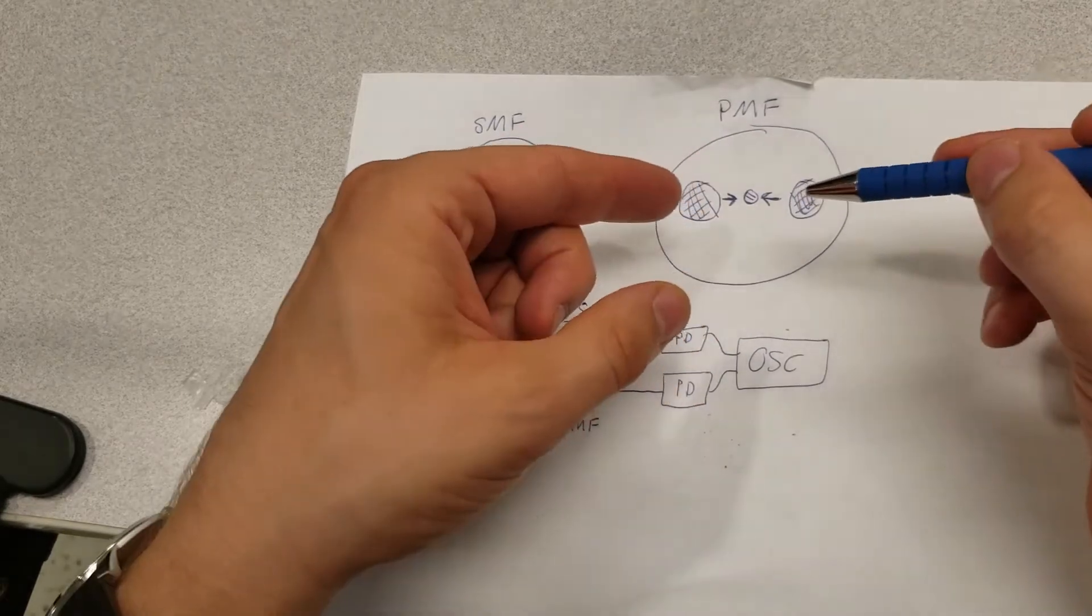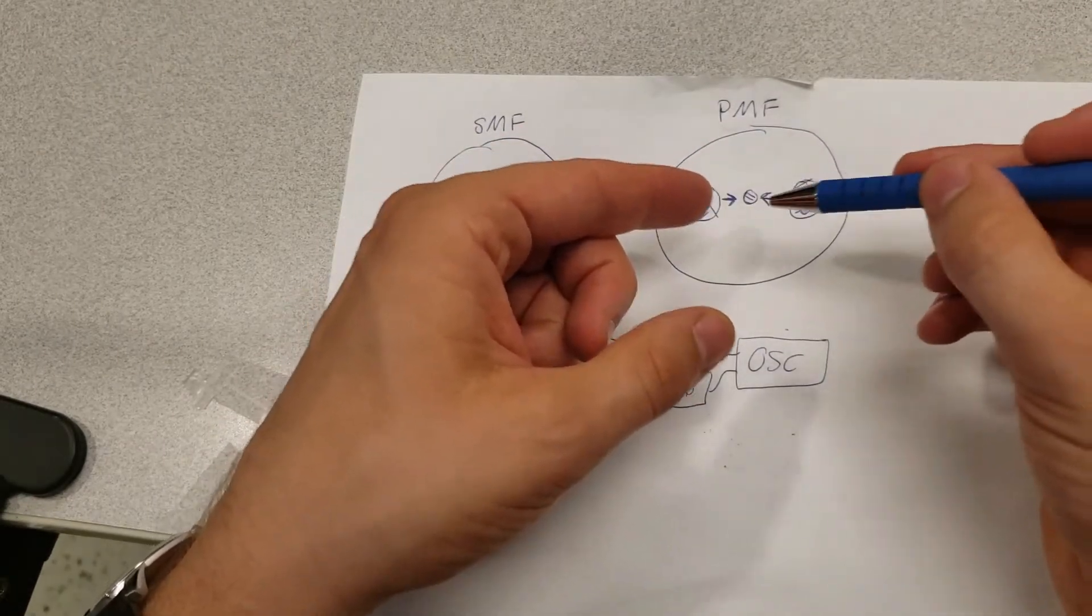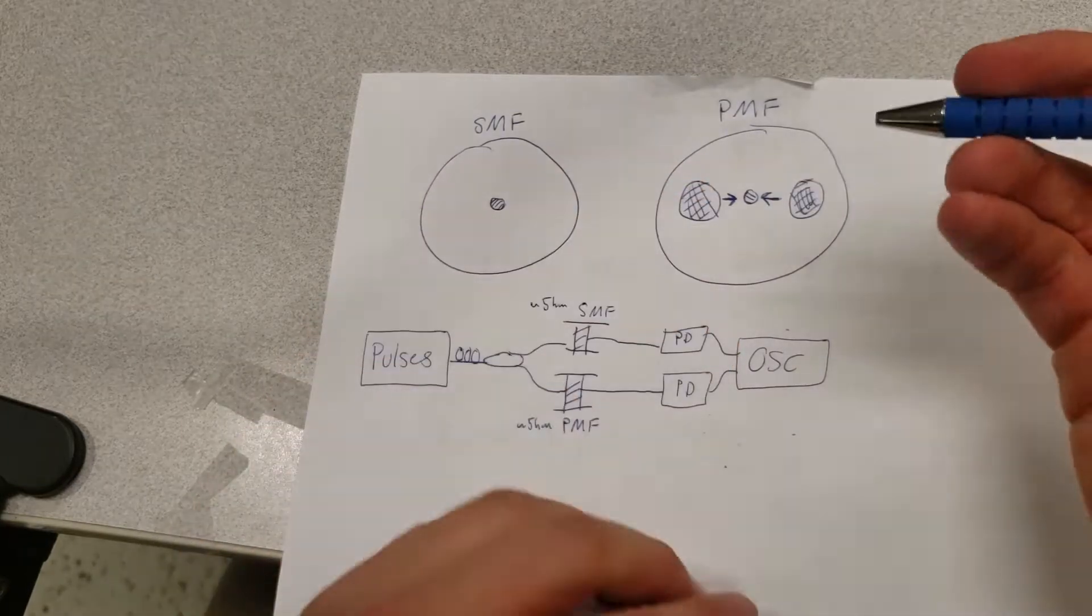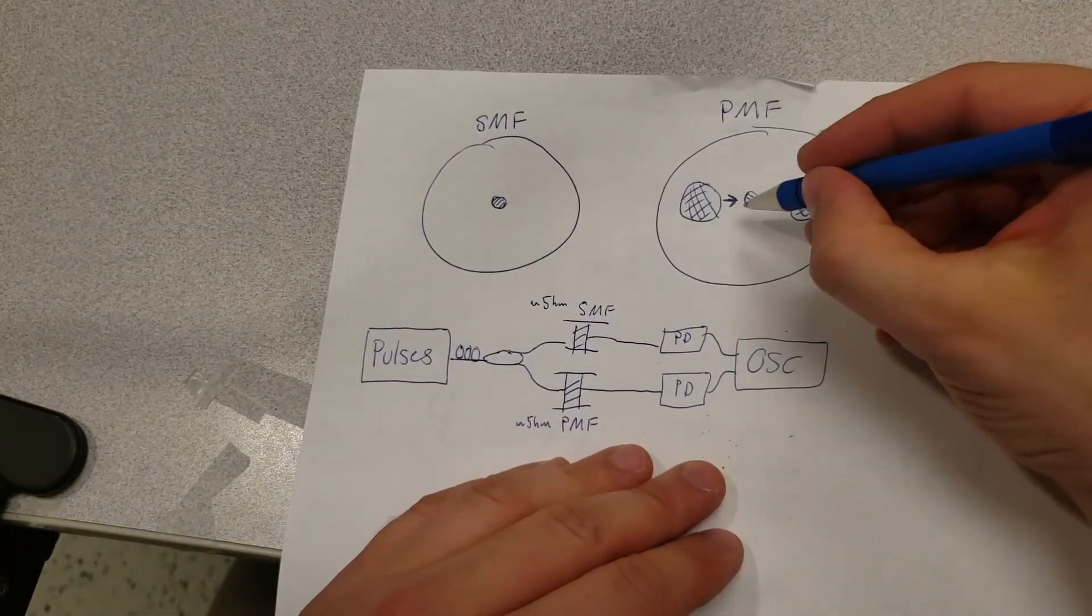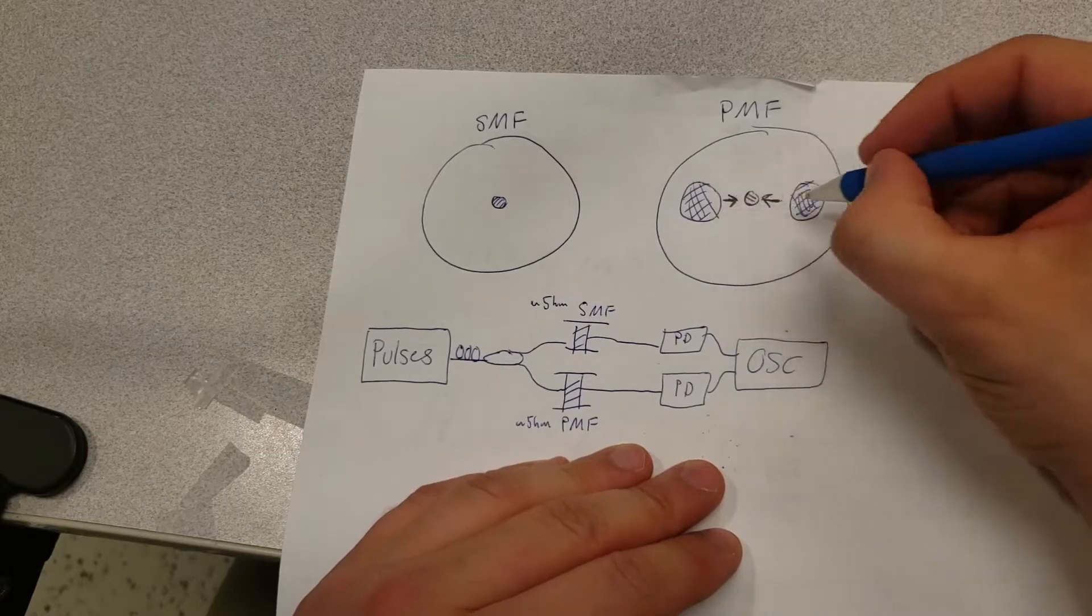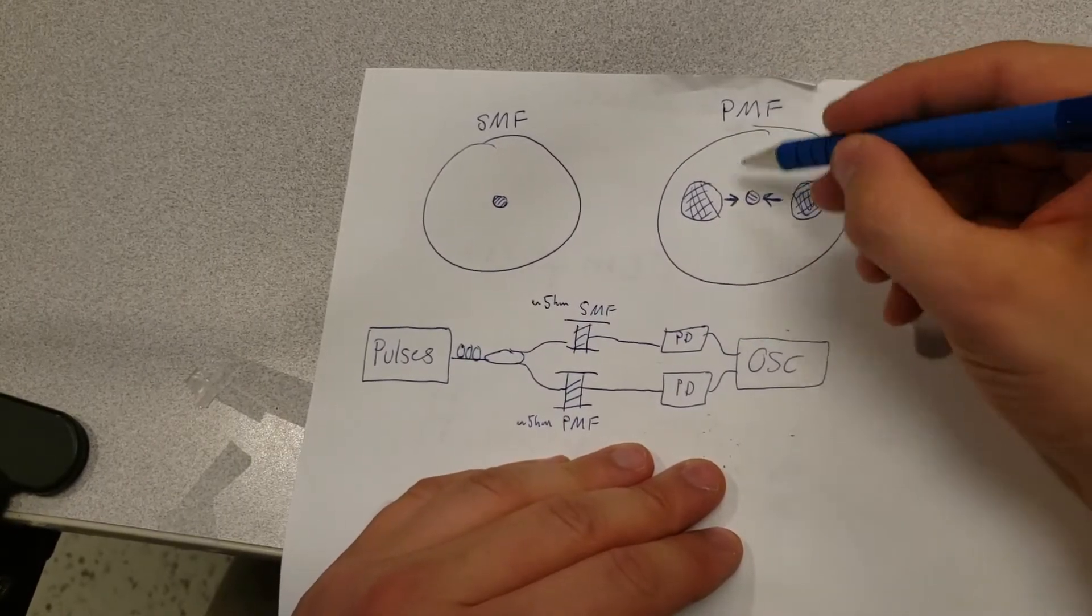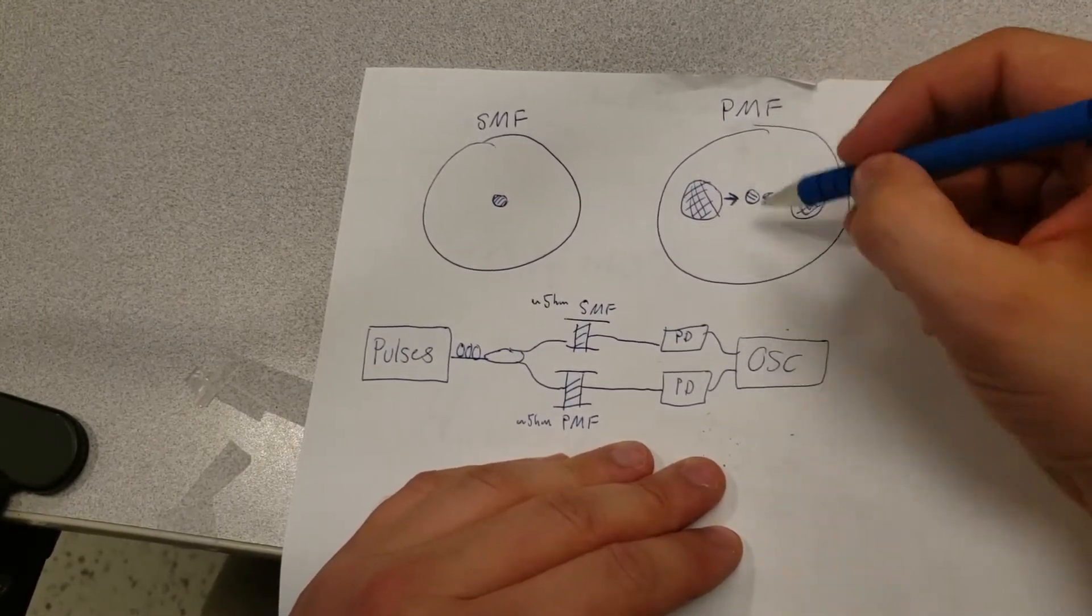This causes them to apply pressure or strain to the core of this fiber, which means that the speed of light along the horizontal axis of the fiber will be different from the speed of light along the vertical axis of the fiber.